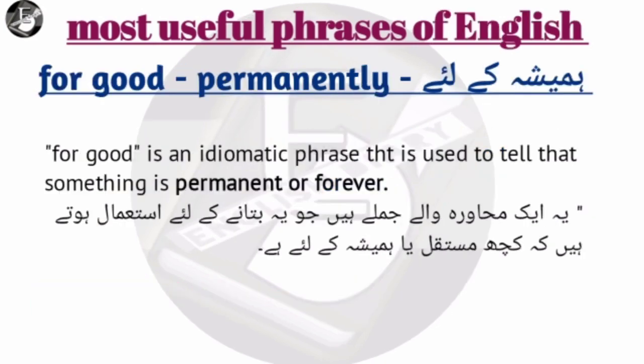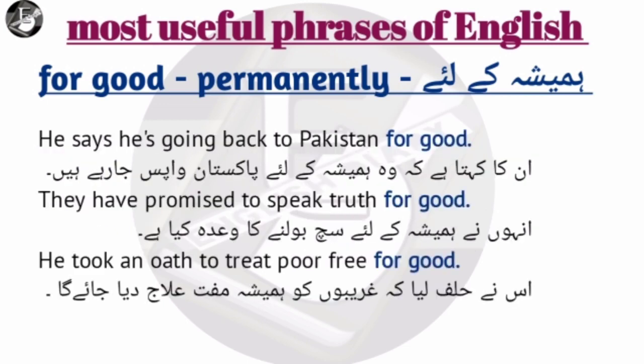Number 2 is 'For Good'. For good means permanently, forever — hamesha ke liye. For good is an idiomatic phrase that is used to tell that something is permanent or forever. Yeh aisi jumlay mein istamal kia jaata hai jahan aap aisi baat kar rahe ho jo aap hamesha ke liye karna jaho ya hamesha na karna jaho. So look at the examples.